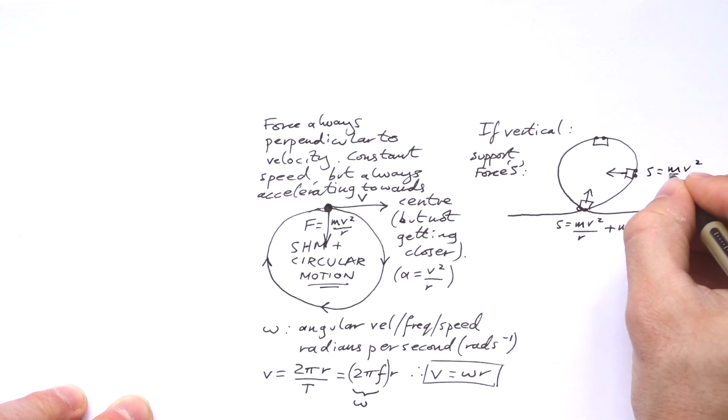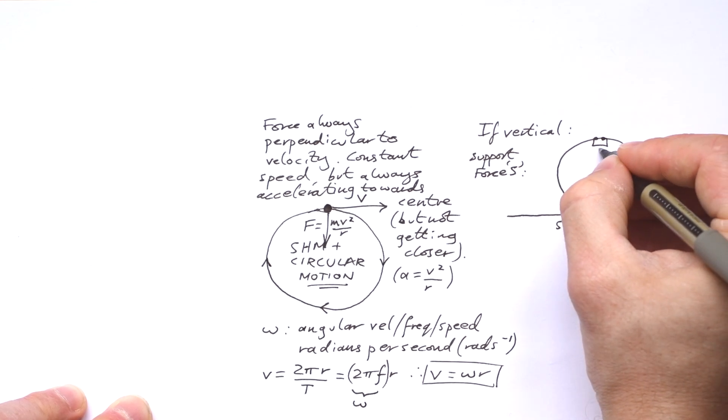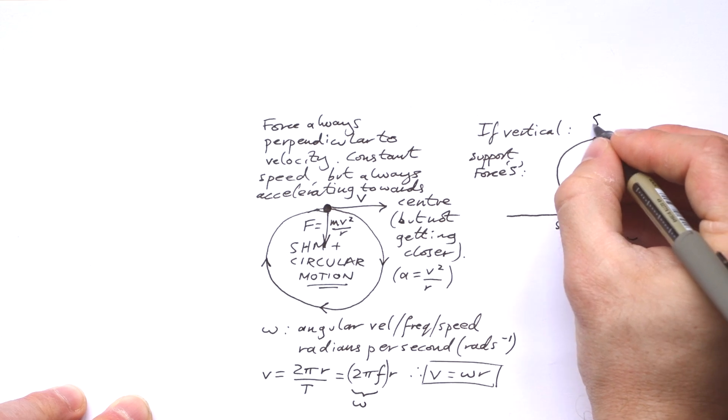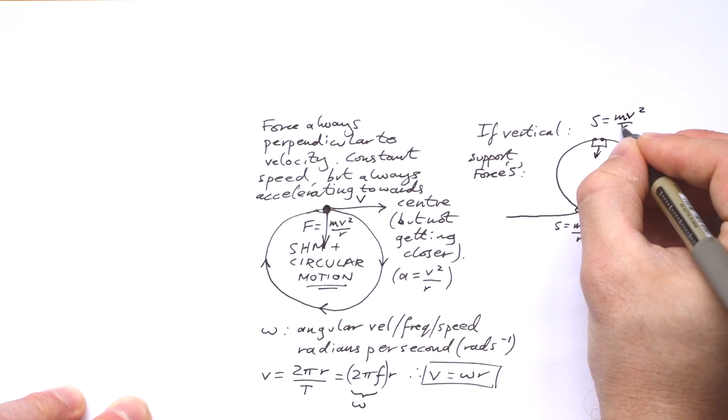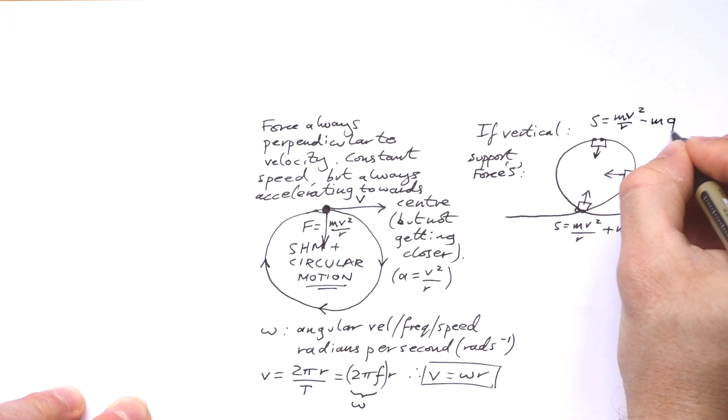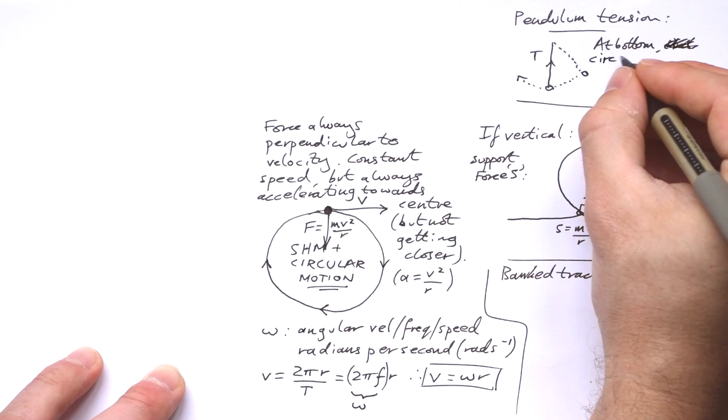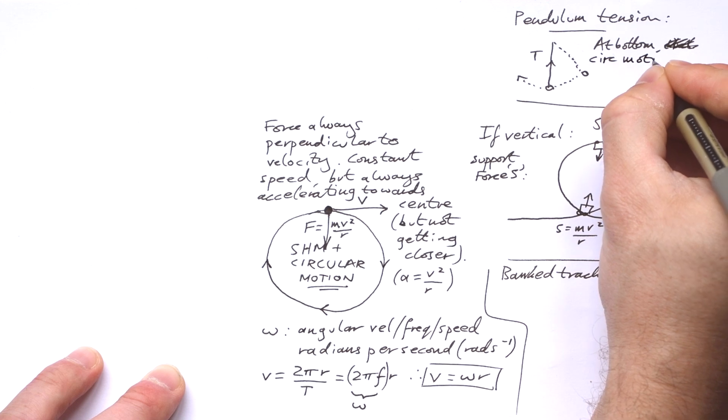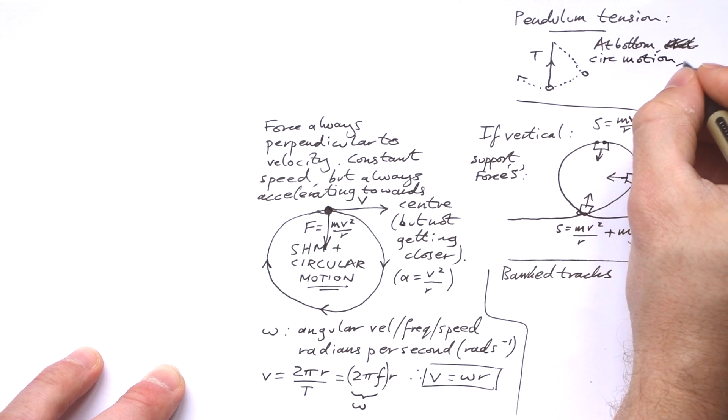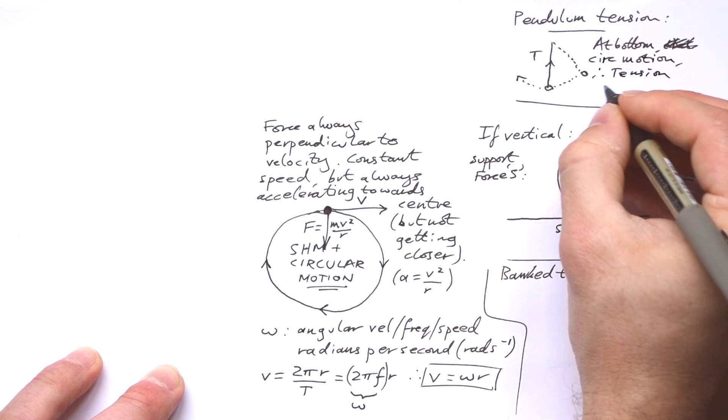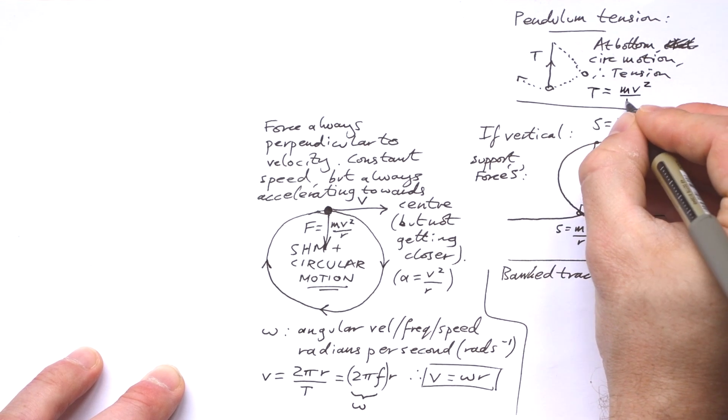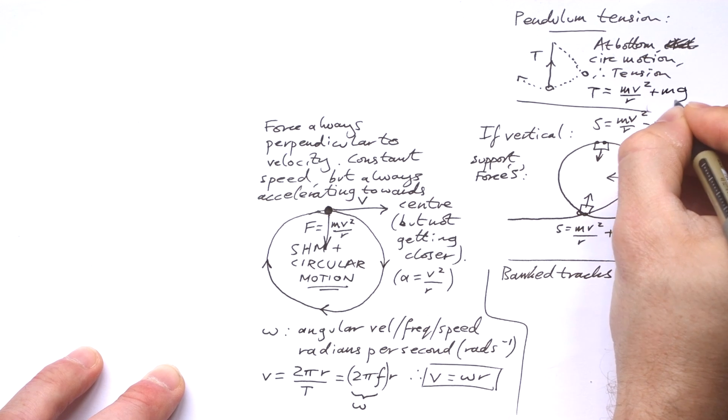On the side, weight doesn't factor in because they're at right angles, so the support force is just mv squared over r. At the top, we know that the support force is going to be less than what it is at the bottom, so it's mv squared over r minus mg. Weight is helping, as it were. This is the same for a pendulum when it's at the very bottom of its swing. Not any other point though, but at the bottom, it is circular motion, so we can say that the tension in the string is mv squared over r plus mg.